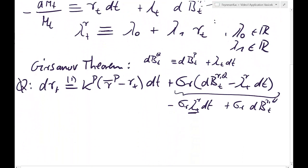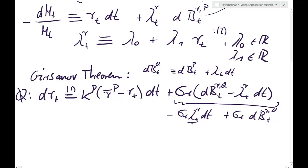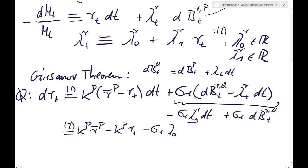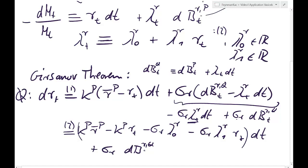Multiplying out the constants using equation 2, the drift under Q becomes: kappa_P r-bar_P minus kappa_P r_t minus sigma_r lambda_0^r minus sigma_r lambda_1^r r_t, dt, plus sigma_r dB_r^Q. We group these into constant terms and terms affine in r_t, so the expression reads: (kappa_P r-bar_P minus sigma_r lambda_0^r) minus (kappa_P plus sigma_r lambda_1^r) r_t, times dt, plus the Brownian motion shock under Q.